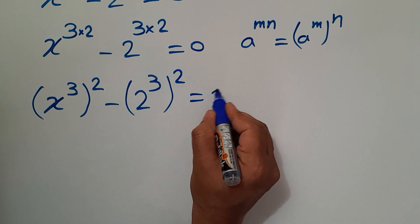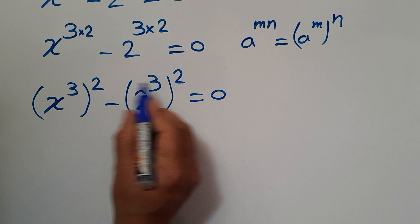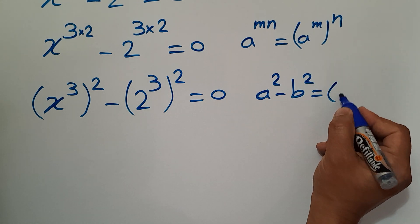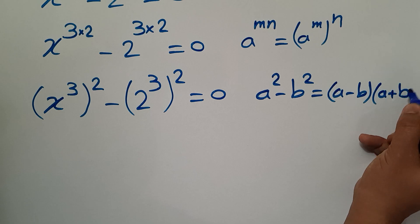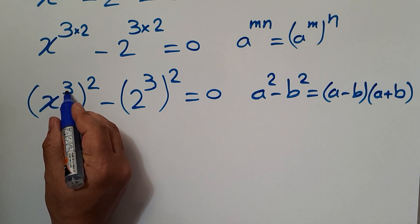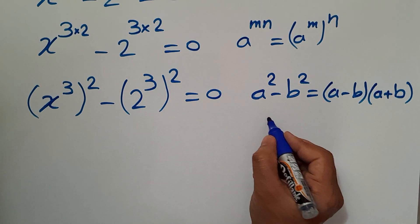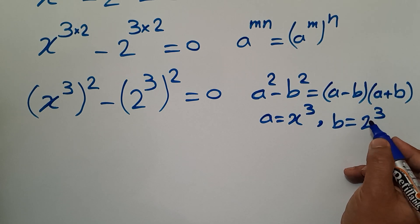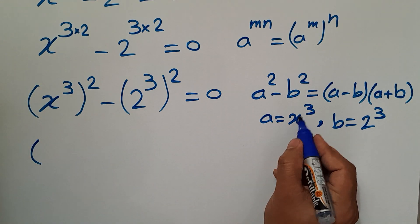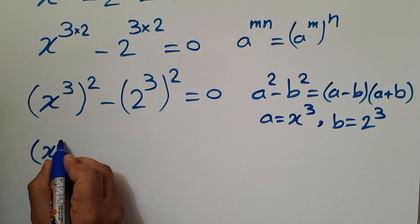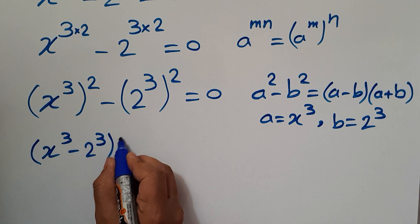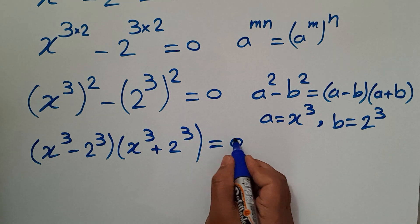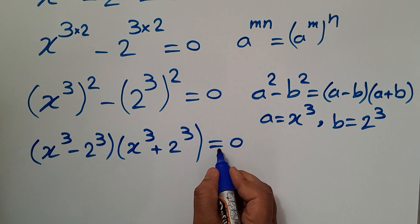So we get x to the power of 3 to the power of 2 minus 2 to the power of 3 to the power of 2 equals 0. Now we have a difference of two squares form: a squared minus b squared equals (a minus b) times (a plus b), where a is x cubed and b is 2 cubed. So we have (x cubed minus 2 cubed) times (x cubed plus 2 cubed) equals 0.